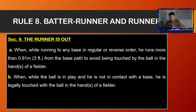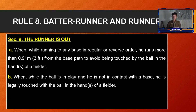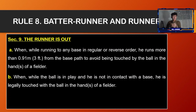Section number nine, the runner is out: first, when running to any base, if the runner runs more than 0.91 meters or three feet from the base path to avoid being touched by the ball in the hands of a fielder. Letter B: when the ball is in play and the runner, not in contact with a base, is legally touched with the ball in the hands of a fielder.